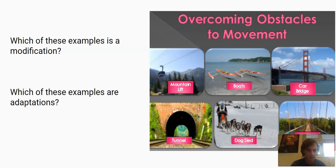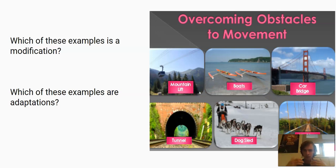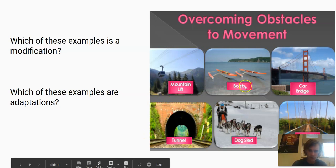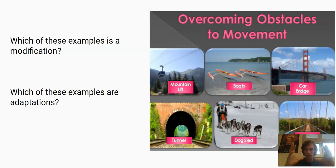Well, all of these things except for the tunnel are adaptations — they are things humans have built to adapt to their environment. The only one that actually involves modifying the environment is the tunnel. So an adaptation is something we build to help us adjust to our environment, like a bridge, a lift, a boat, or a sled. A tunnel is where we actually change the physical environment itself.